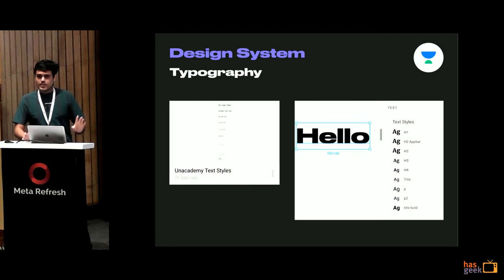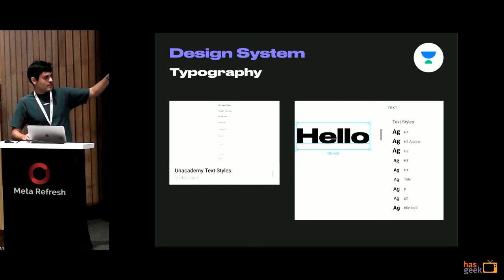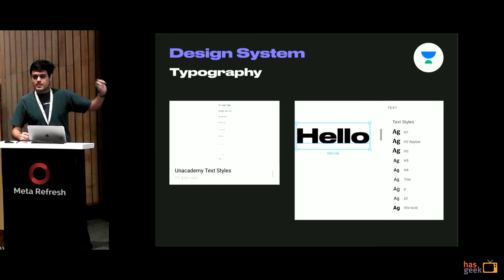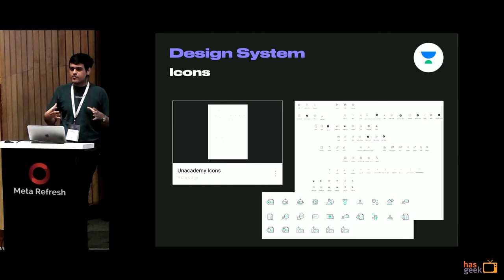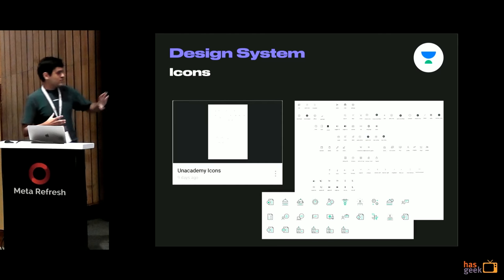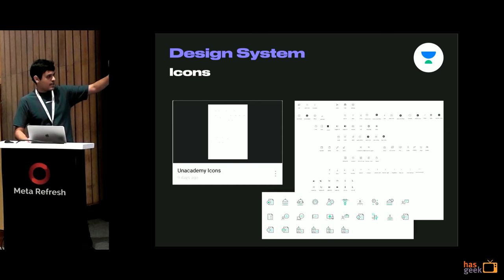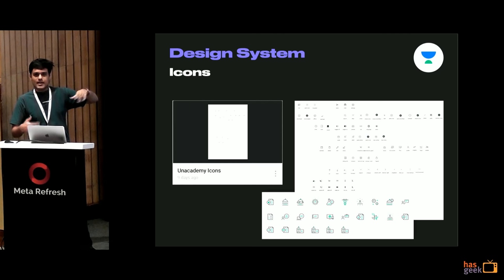The same thing with typography — styles are very clearly defined. Anytime you write something you can say this is an H1, H2, or title. Designers know that P2 is to be used in cases like that. We also have a custom icon set of about 150 icons — some are category icons, some are actions in the app — and we made this a component as well. Anytime you're working on something, you can just search for components in Figma and drag and drop them into your file.